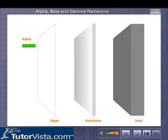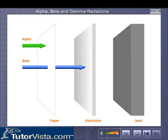The alpha rays are slightly heavier and move with relatively less velocity. They have less penetrating power and can be stopped by a simple barrier like a sheet of paper. The beta rays are less heavy than alpha rays and move with a relatively higher velocity. They have more penetrating power and can pass through paper but can be stopped by a barrier like an aluminium foil.